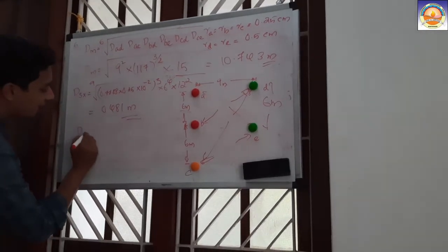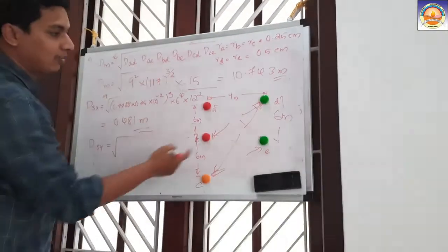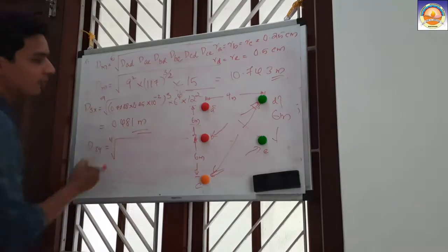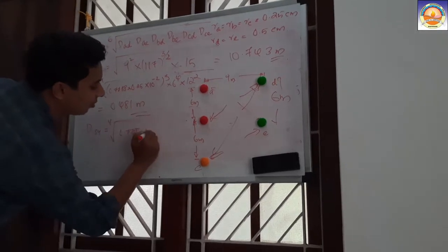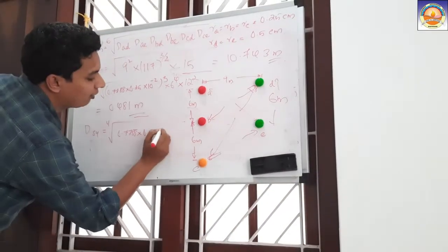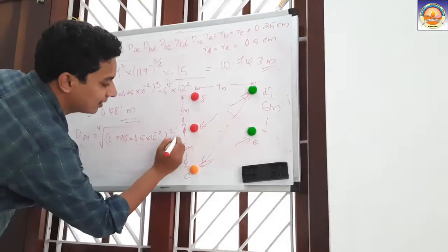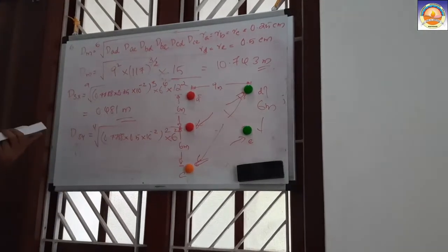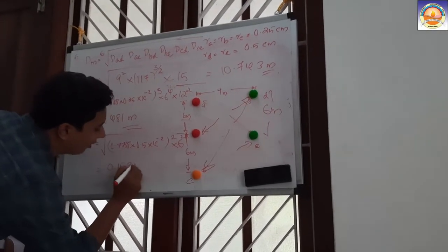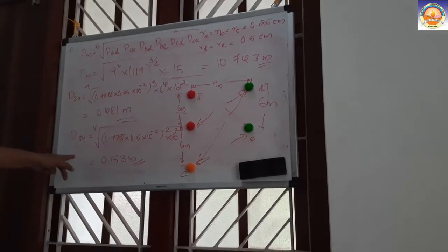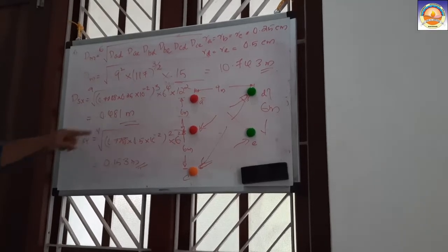For the Y (second) circuit with two conductors, there are N² = 4 terms. The self-GMR uses R' = 0.7788 × 0.5 × 10⁻² m, appearing twice (squared). The distance between D and E is 6 m, giving 6². This yields D_SY = 0.153 m.